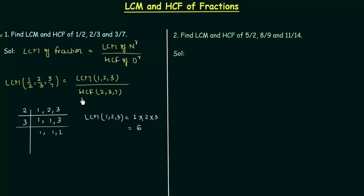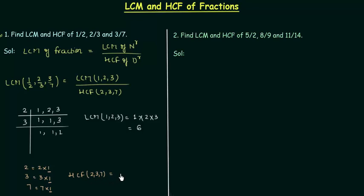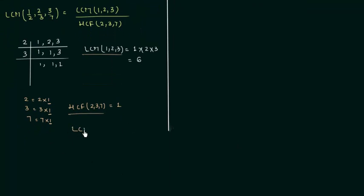So 6 is the LCM of the numerators. Now we find the HCF of the denominators 2, 3, 7 using prime factorization. These are all prime numbers, so 2 = 2×1, 3 = 3×1, and 7 = 7×1. The only common factor is 1, so HCF of 2, 3, 7 is 1. Therefore, the LCM of the fractions 1/2, 2/3, and 3/7 is 6/1, which equals 6.